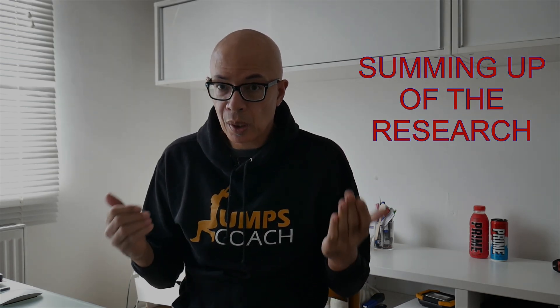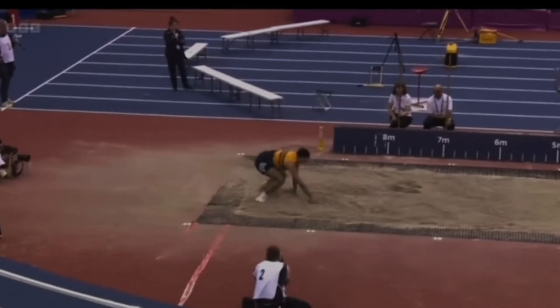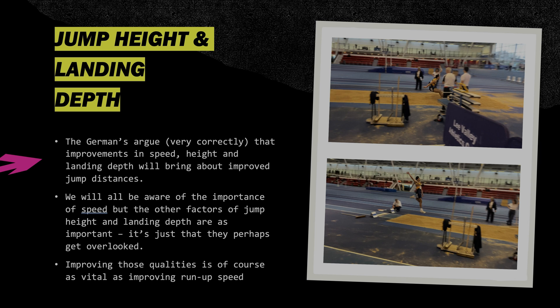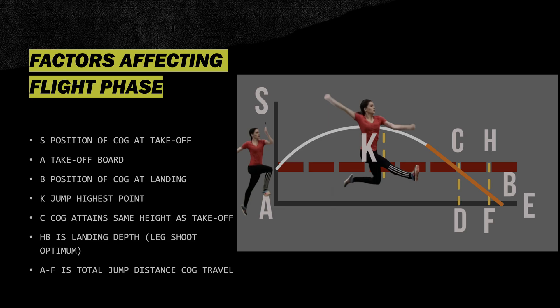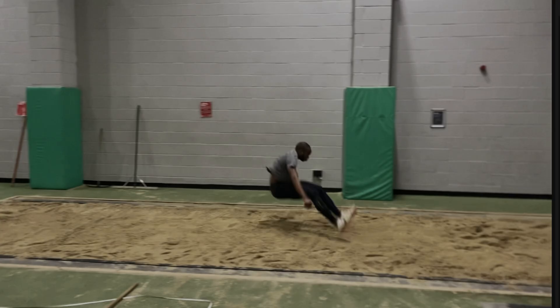To sum up what the Germans indicate for improving long jump performance: improvements in speed, height, and landing depth will bring about improved jump distances. Speed is well understood, but the other factors — jump height and landing depth — are equally important. As coaches, we look at ways to improve the height jumpers gain off the board and how they can improve their landing depth, as improving those qualities will be vital to improving long jump performance.